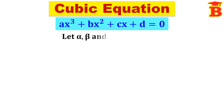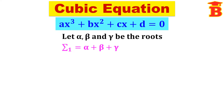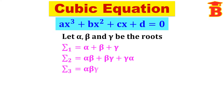Let alpha, beta and gamma be the roots. It's a cubic equation, so there are three roots — we take them as alpha, beta and gamma. We know that sigma 1 equals the sum of single terms, that is alpha plus beta plus gamma. Sigma 2 equals the sum of two-two terms, that is alpha beta plus beta gamma plus gamma alpha. And sigma 3 is the product of all three terms, that is alpha beta gamma.